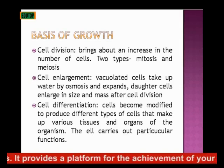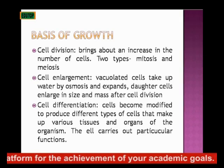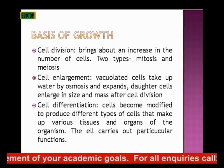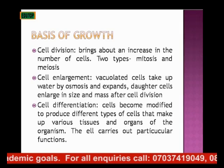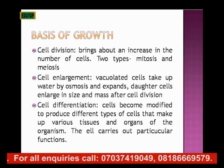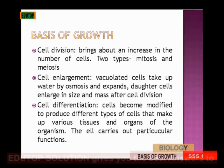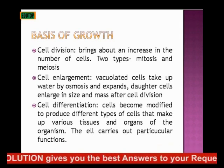Cell division brings about an increase in the number of cells. In an earlier class, we talked about the two types of cellular division — mitosis and meiosis — and explained their phases. You remember PMATs: prophase, metaphase, anaphase, and telophase. Go back to check that to refresh your memory.